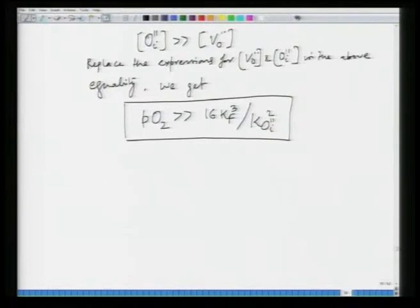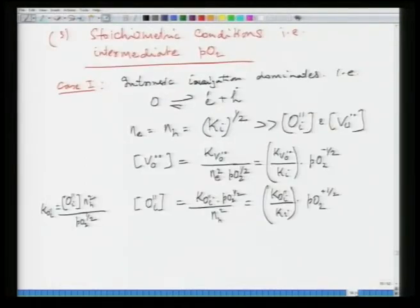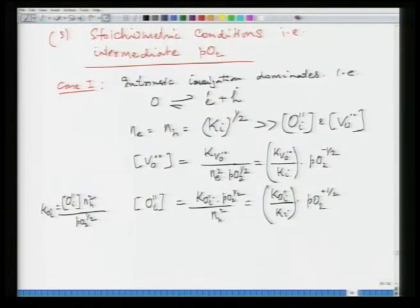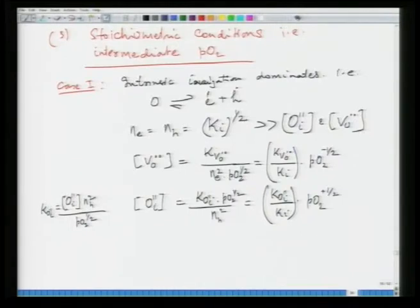The last remaining region is the stoichiometric condition. Case one: when intrinsic ionization dominates — intrinsic creation of electrons and holes. In this situation, electron and hole concentrations are equal, both equal to K_e to the power half, and these two concentrations are much larger than oxygen interstitial and oxygen vacancy concentration. As a result, oxygen vacancy and oxygen interstitial concentrations vary as P to the power minus half and plus half respectively in the intermediate range.